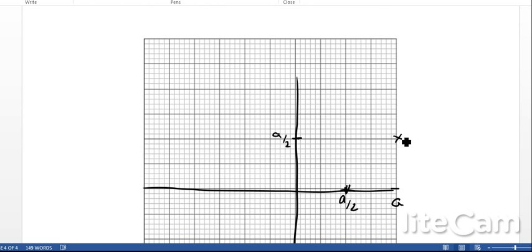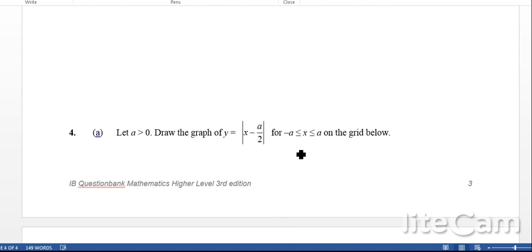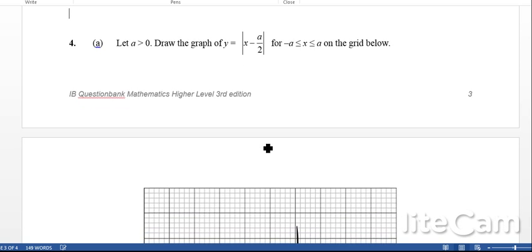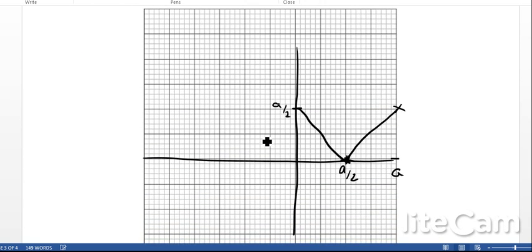The next one to look at, let's have a look at the other endpoint, so when x is -a, -a - a/2 is going to be -1.5a, but the absolute value makes it positive, so it's going to be positive 1.5a. Following the same scale as before, it's going to be -a, -3a/2,